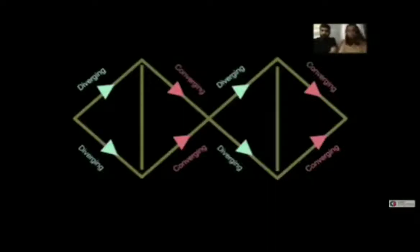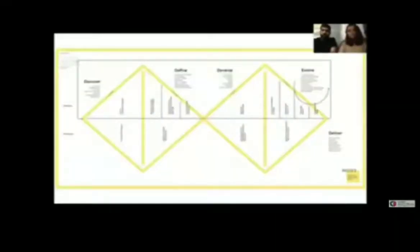Let us now look at the double diamond. As you can see, we follow a loop between discover, define, develop and deliver. If you actually find the right solution and you're able to deliver, that is the place where you deliver. But if not, you evolve and you learn better.